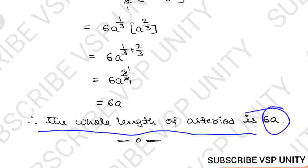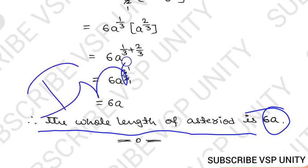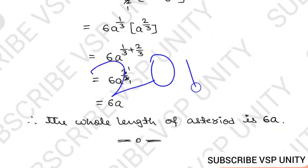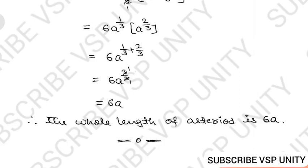The total length of the given asteroid is 6a units. This is a very important problem — it has appeared in examinations for 20 marks, so do not neglect it. We will discuss more such problems daily. Thank you for watching, like, share, and subscribe. Have a nice day.